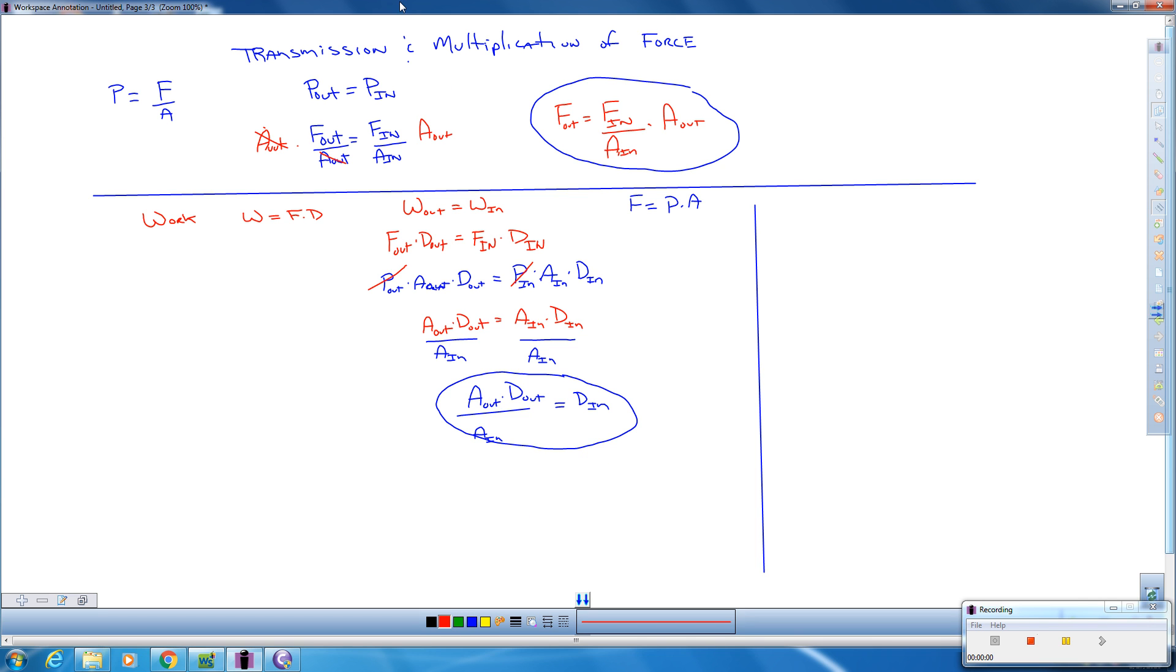They are moving at the same speed, or during the same amount of time. So since they are moving at the same amount of time, I can replace distance here with velocity. So I can say that velocity in equals area out divided by area in times the velocity out.